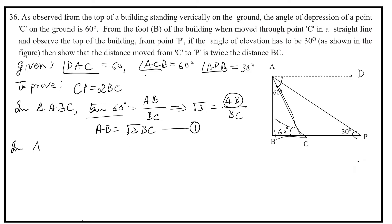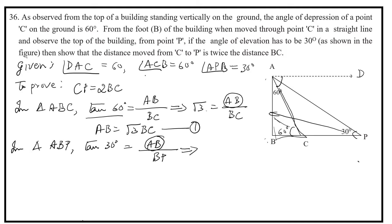In triangle ABP, tan 30° equals opposite side AB divided by adjacent side BP. Expressing AB in terms of BP: AB equals BP divided by root 3. Let this be equation 2.